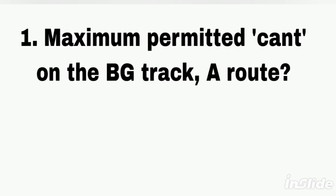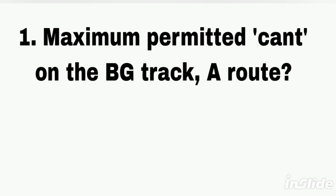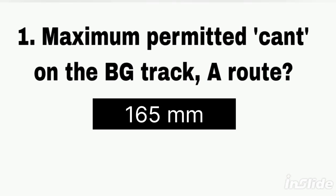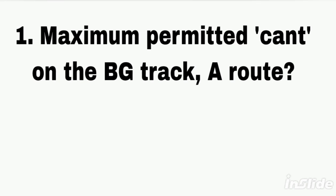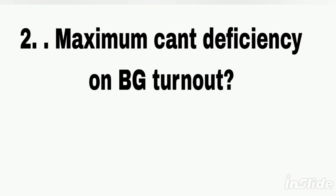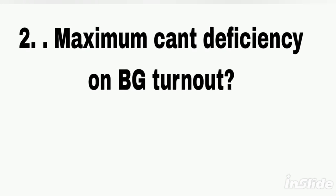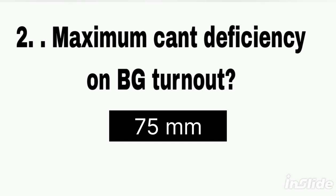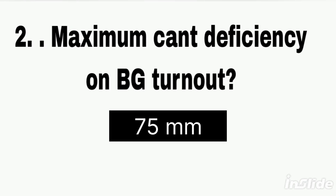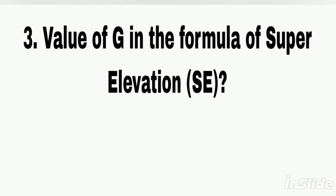Q1. Maximum permitted cant on the broad gauge A route. Answer: 165 mm. Q2. Maximum cant permitted on broad gauge turnout. Answer: 75 mm.